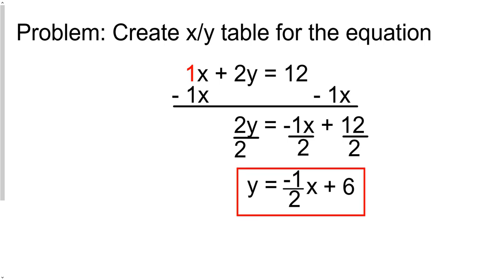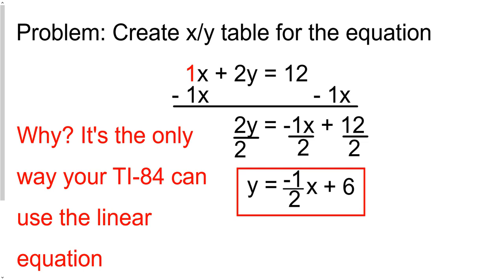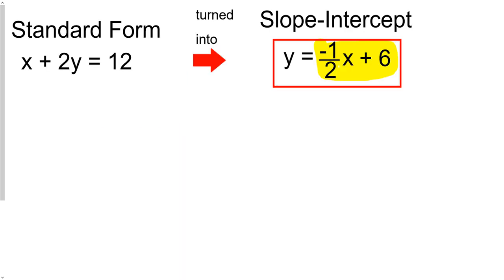So here's the slope-intercept equation, and again, why do we have to do it? Because your calculator doesn't know how to handle the standard form equation, it can only handle the slope-intercept, so you've got to take these standard forms and put it in slope-intercept. After you do that, then it's all going to the calculator.